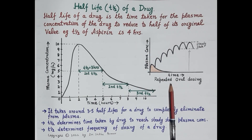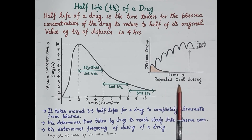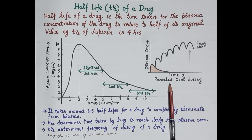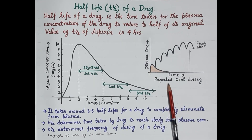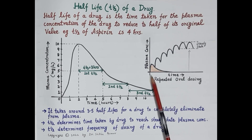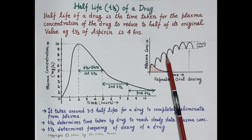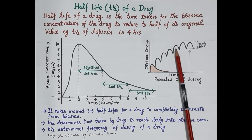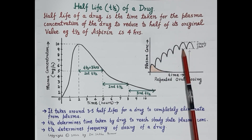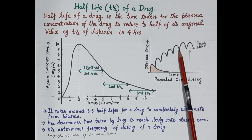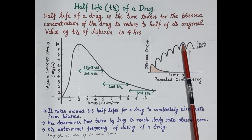Secondly, when a drug is administered repeatedly — for example by oral administration — as per the dosage frequency, that is once a day or twice a day, the drug starts accumulating in the body until a balance is attained between the administration of the drug and the elimination of the drug.